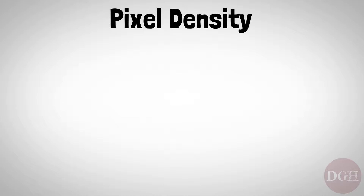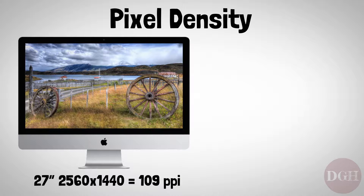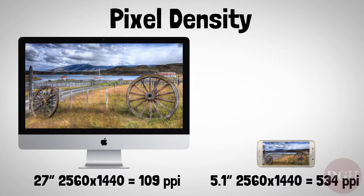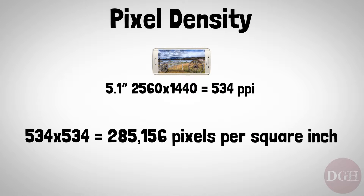The next term, pixel density, tells you how closely the pixels are crammed together. Essentially, it's an expression of the relationship between size and resolution. For example, a 27-inch desktop monitor with a resolution of 2560 by 1440 has about 109 pixels per inch (PPI), while a smartphone with the same resolution has a pixel density of 534 pixels per inch. This figure refers to pixels horizontally and vertically in one square inch, so you square that number to find the total — in the case of this smartphone, about 285,000 pixels per square inch.